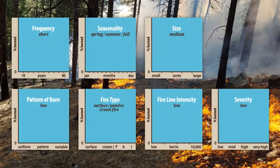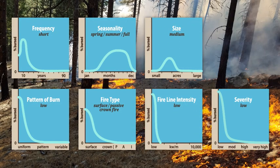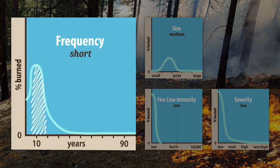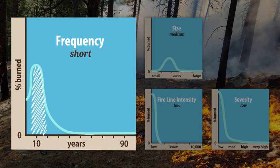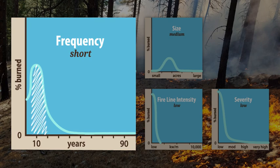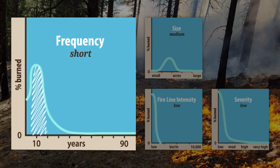Let's take a look at a forest dominated by ponderosa pine. The fire frequency historically here is pretty frequent. Notice that there are some areas under the curve that burn more or less frequently — nature does not always work on a clock, and there's always some variation. However, the bulk of the area under the curve burned in the 7-to-20-year time frame.